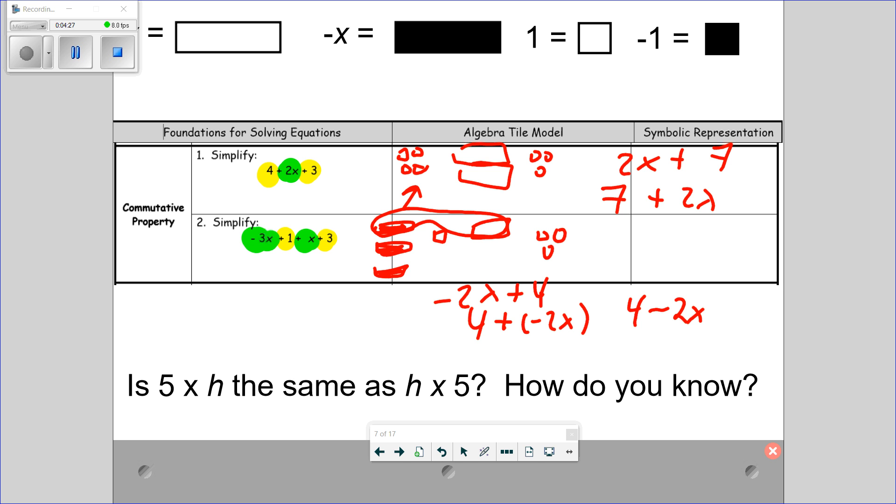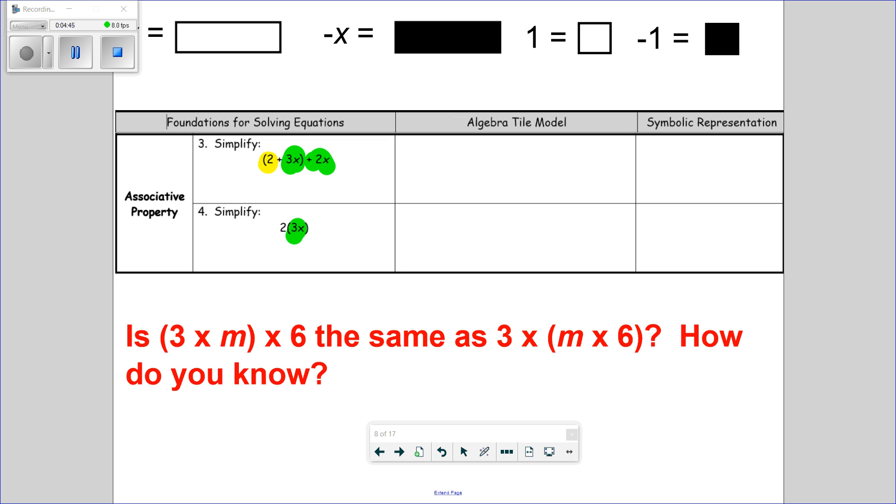So, is 5 times h the same as saying h times 5? How do you know? Again, I could replace the h with the number 2. Is 5 times 2 the same as saying 2 times 5? 10. Yes, it is. Or 5 times h is 5h. H times 5 is also 5h. Next one.